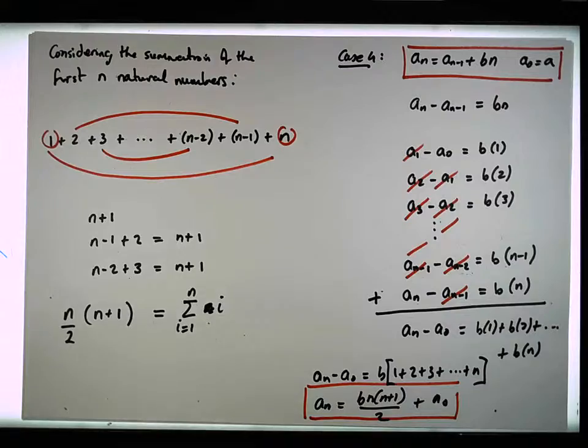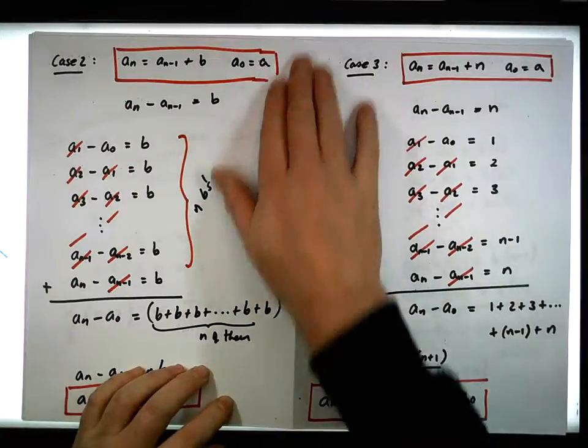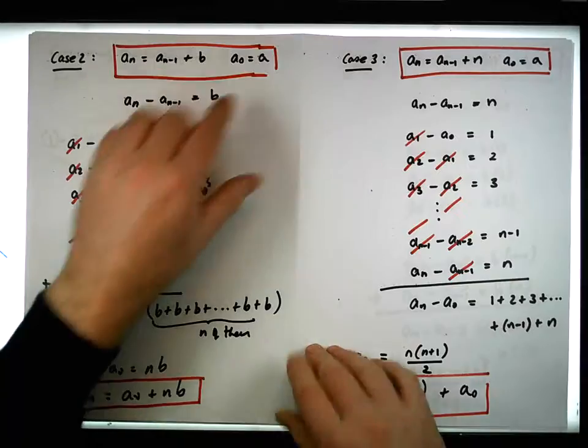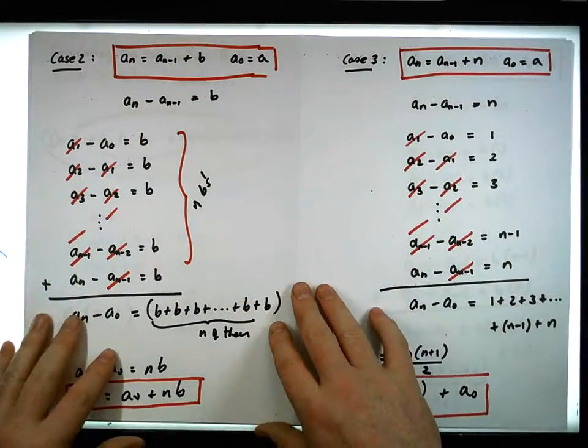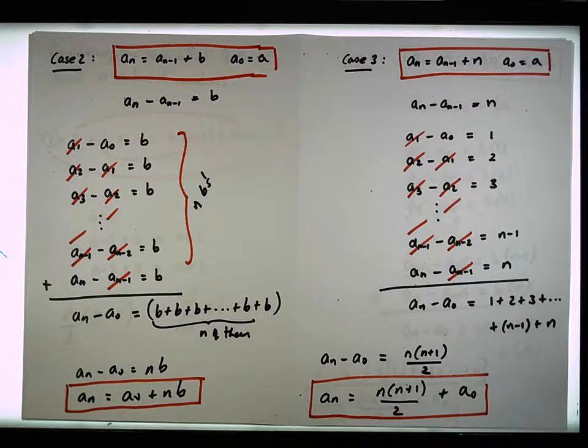So guys, I just did a few examples here of solving some degree one recurrences. The important thing about the degree one recurrences are that they were either homogeneous or they were heterogeneous, and we looked at four particular examples.